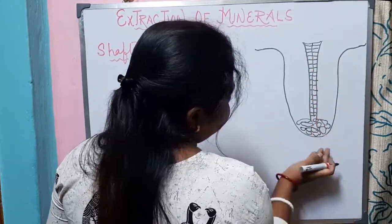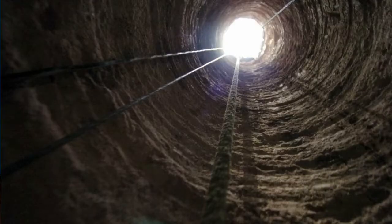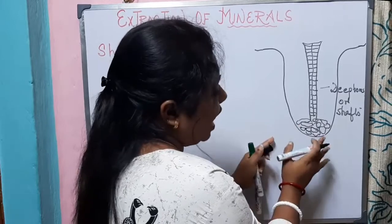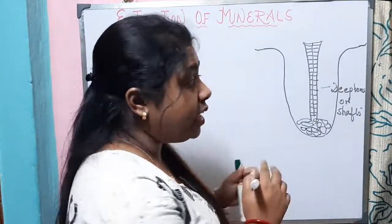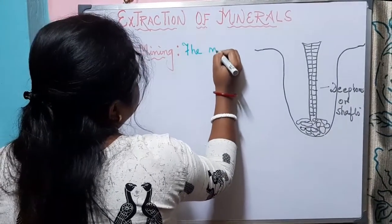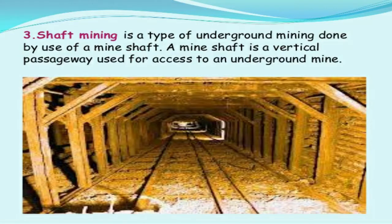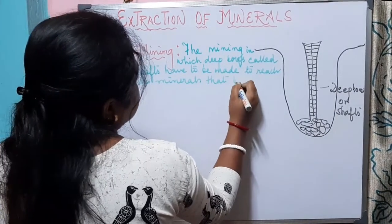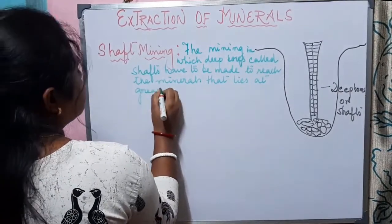Deep bores or shafts are dug out so that the minerals can be taken out. These are minerals which do not lie near the surface but lie at greater depth. This is referred to as shaft mining or underground mining. In shaft mining, deep bores called shafts are made so that we can reach the minerals lying at greater depths.